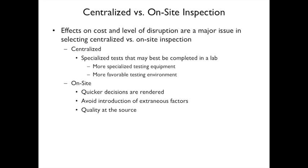Centralized versus onsite inspection. The question is whether to inspect at a centralized point or onsite where work is happening. Centralized inspection works well when specialized testing equipment is required — for example, military equipment often needs environmental testing such as vibration, heat cycles, and shake testing, which requires a specialized lab. A visual inspection, on the other hand, might be done onsite — quality at the source, right where the product is being made.